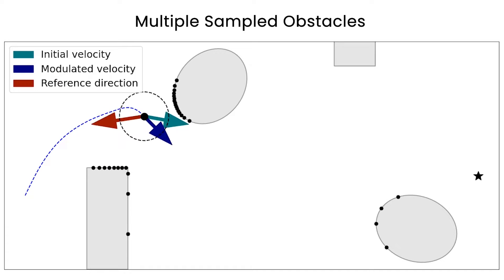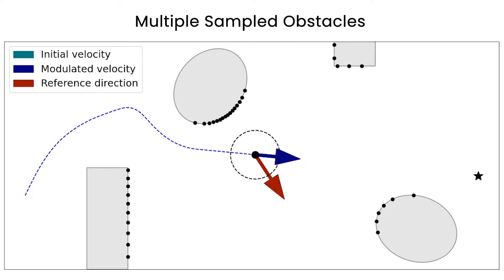The algorithm does not reconstruct the number or shape of the surrounding obstacles, but the creation of the reference direction allows for navigating in cluttered environments.